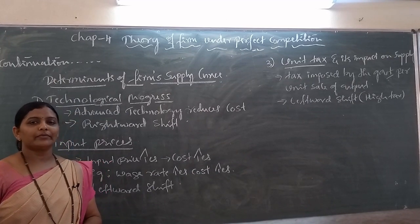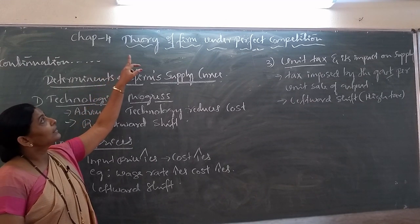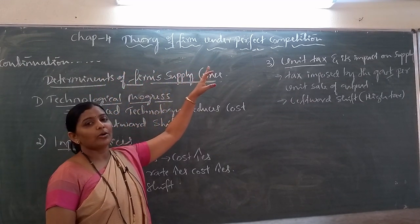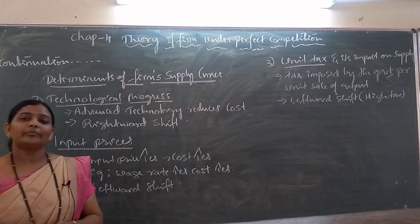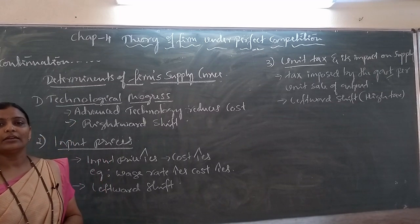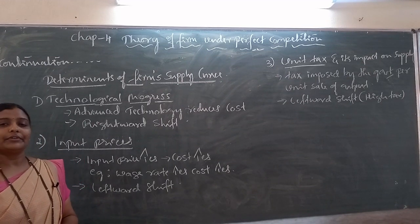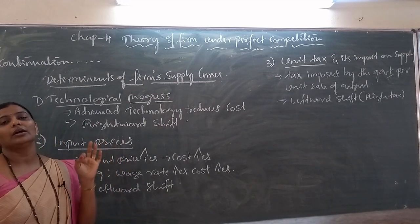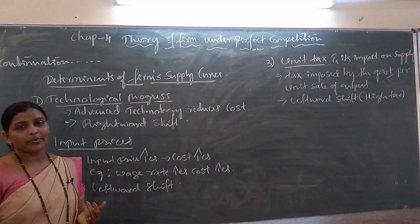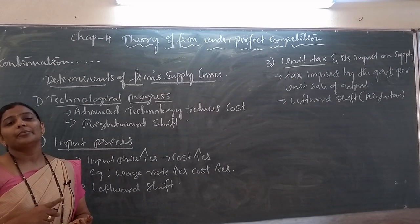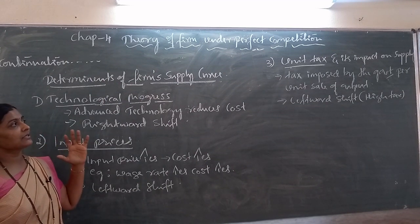Welcome back students. In my previous class I was discussing the fourth chapter in part A, that is theory of firm under perfect competition. In this chapter we have learnt the meaning of perfect competition and its features, profit maximization of firm under perfect competition, supply curve, short term supply curve with the help of a diagram, then normal profit, super normal profit, break even point, shut down point. These concepts we have discussed in my previous class.